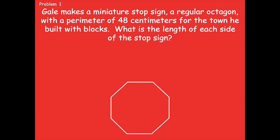Pause if you need more time. I came up with 48 divided by 8 equals S. I said 48 centimeters because that's the total perimeter. I divided it by 8 because there are 8 equal sides in an octagon. I used a letter to represent the unknown — S for side. Now I have to solve for S. So 48 divided by 8. What's 48 divided by 8? It's 6. So 48 divided by 8 equals 6.